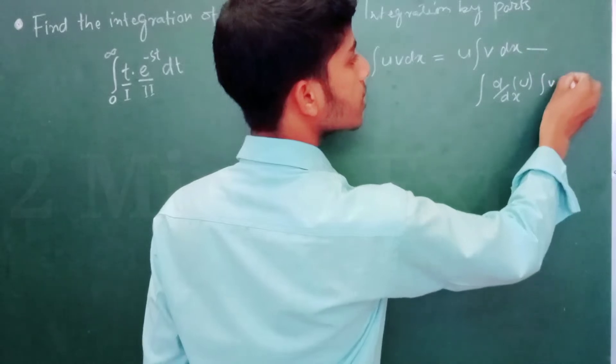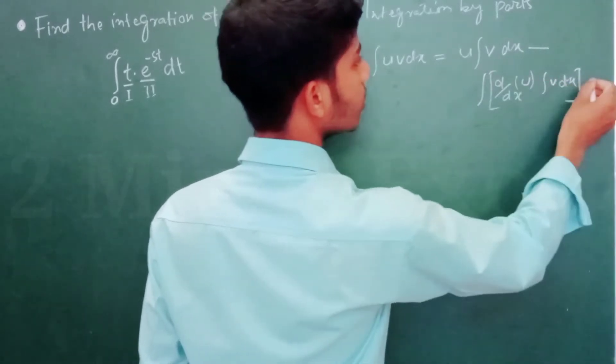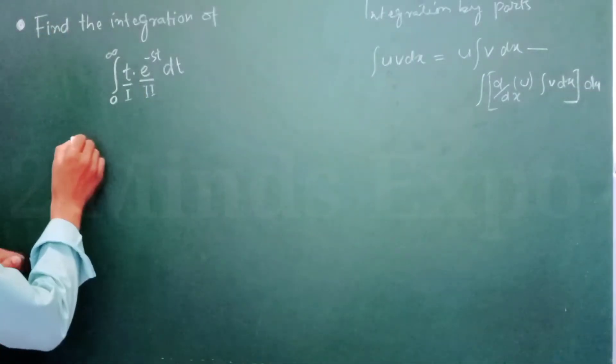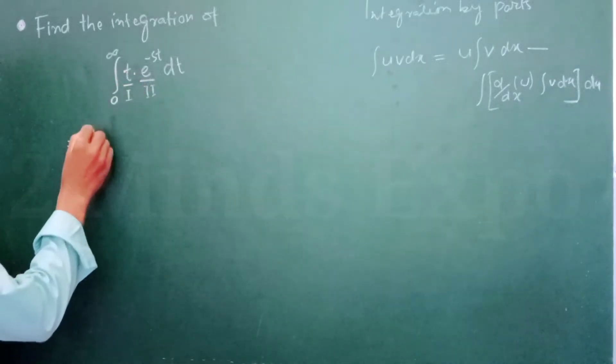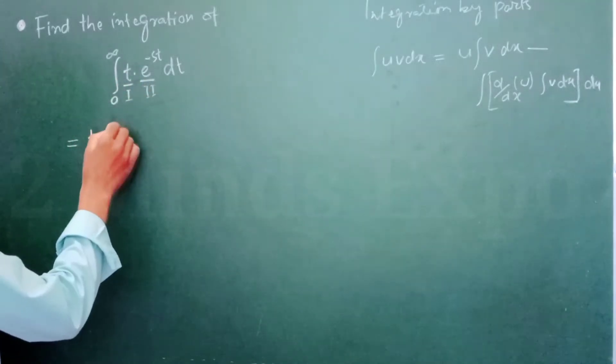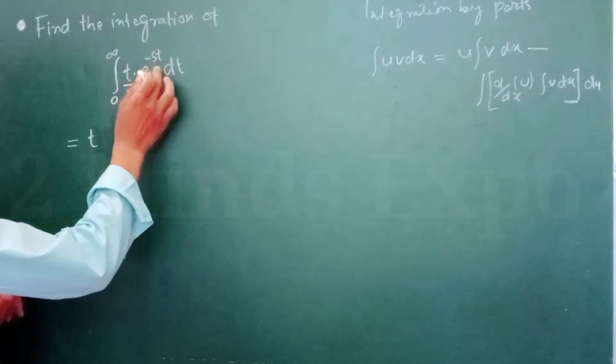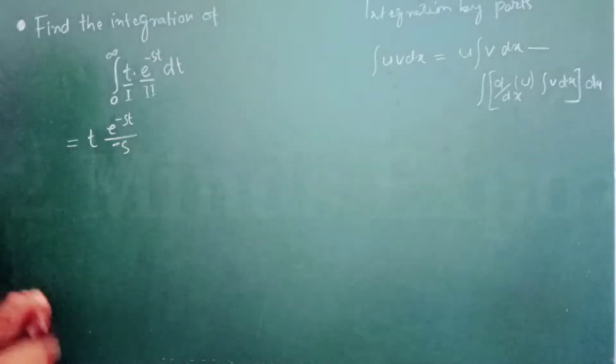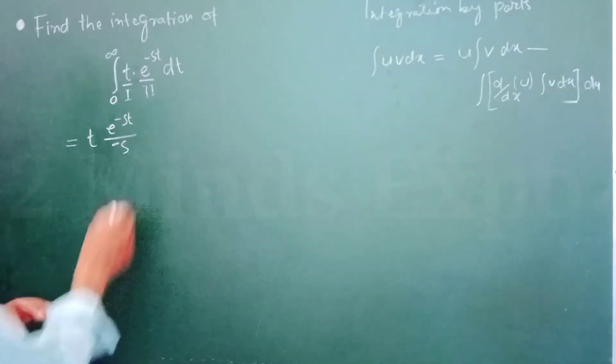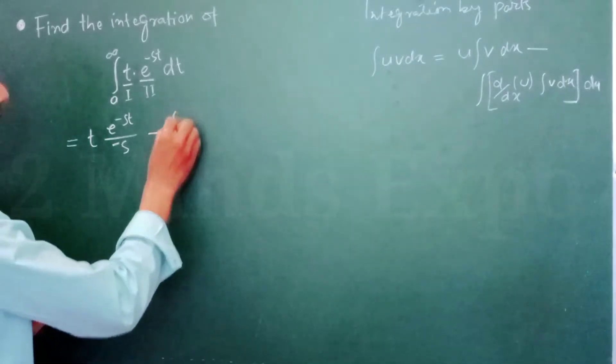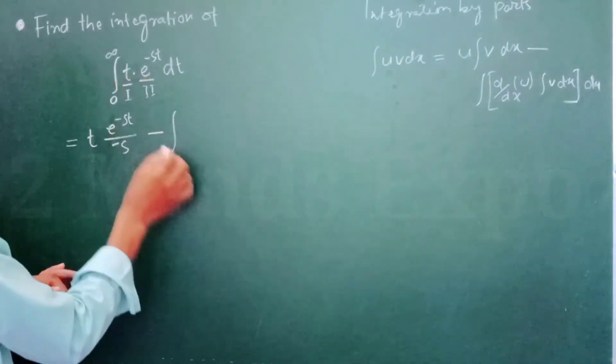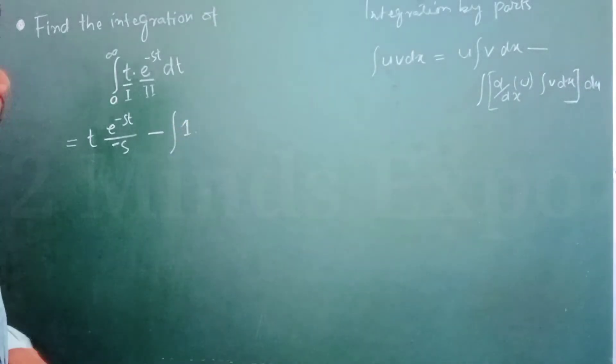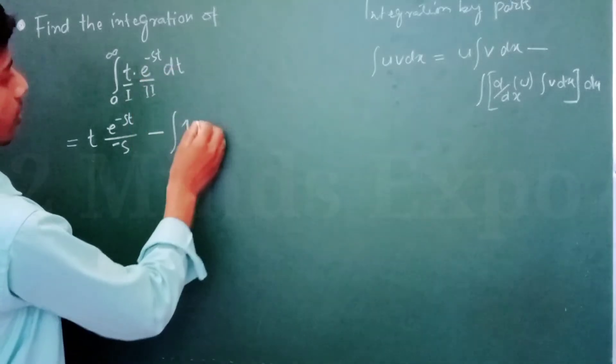So here we can see the first term will come out, and the integration of e to the power minus ST. We know e to the power minus ST divided by minus S, minus integration differentiation of T. We know the differentiation of T means one, and integration of second part. So integration of second part means e to the power minus ST divided by minus S into dT.